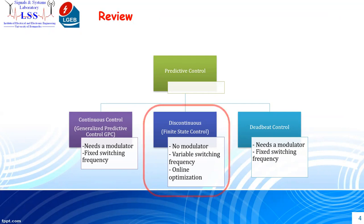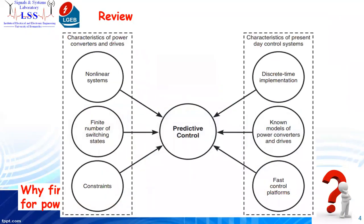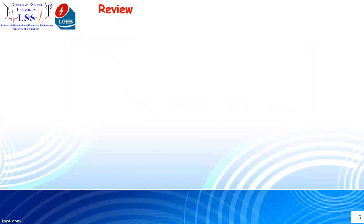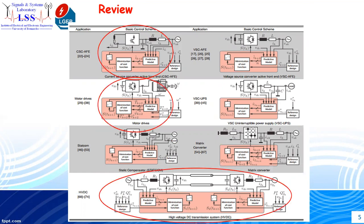Each control technique has its own features. Finite control set model predictive control is particularly suited for power electronics because it handles non-linearity, the finite number of switches, other constraints, the discrete nature of the control strategy, and its flexibility in design. This makes it very suitable for power electronics applications such as grid-connected power converters, motor drives, and HVDC systems.